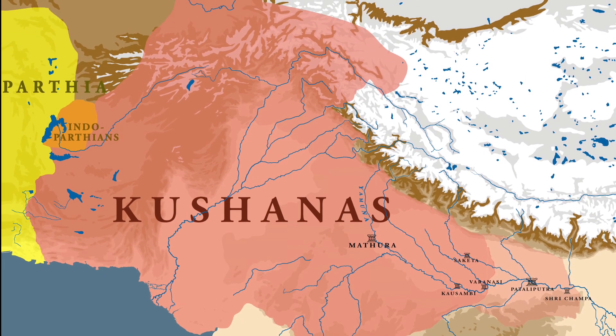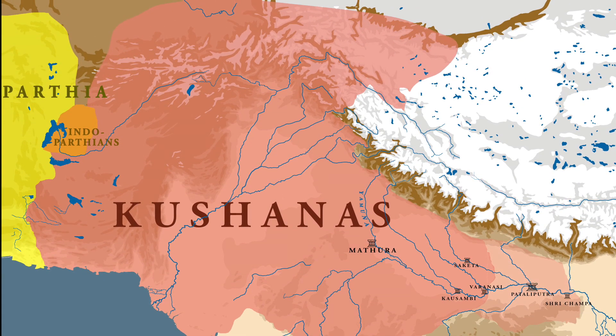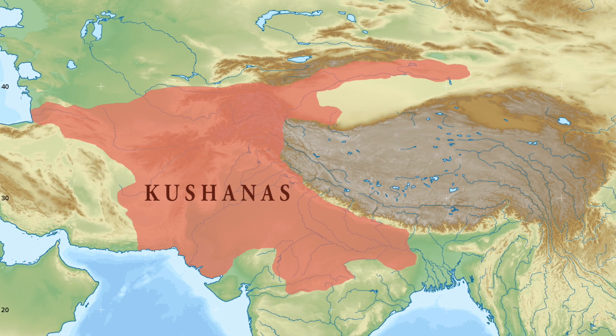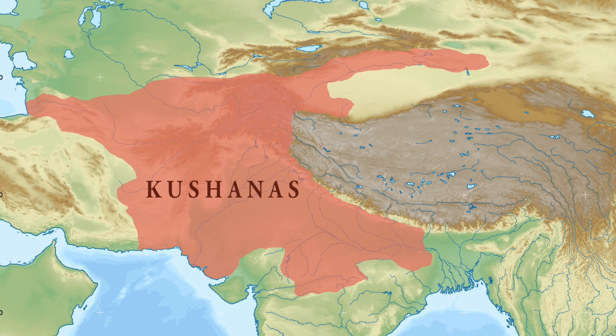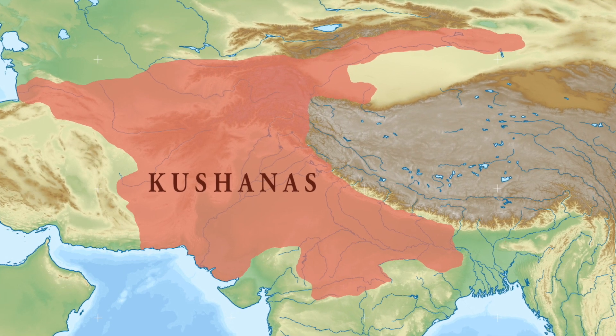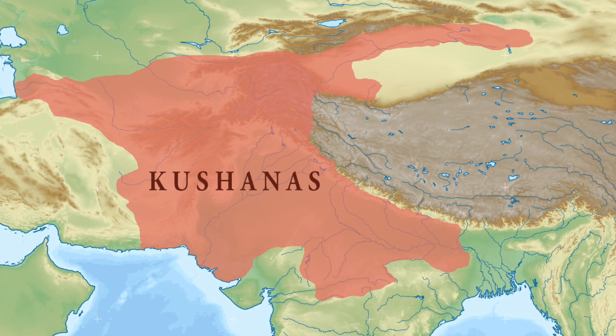The second stage also led to the conquest of several parts of Central Asia and the Tarim basin. With these conquests, Kanishka had extended his empire from Central Asia to the heart of the Ganga Valley — truly a culturally and religiously diverse empire. This multi-religious nature is also reflected in his coins, which give us an idea of the religious policy Kanishka followed.